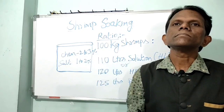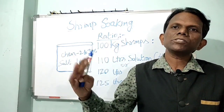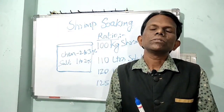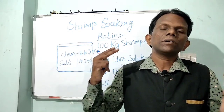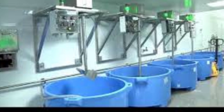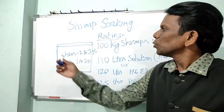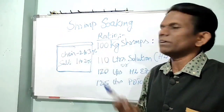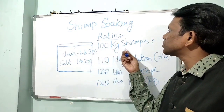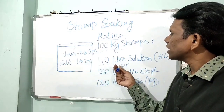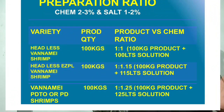Regarding chemical concentration: whether using phosphates or non-phosphates, salt should be added in combination because it provides a synergistic effect — increasing texture, appearance, brightness, and flavor retention. That is why salt must be added along with phosphates or non-phosphates during shrimp treatment. For example, for 100 kg of headless shrimp, you need to prepare 110 liters of solution.